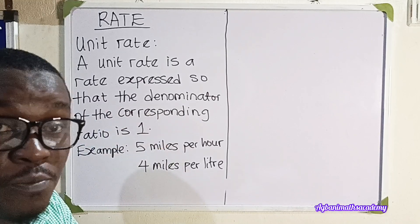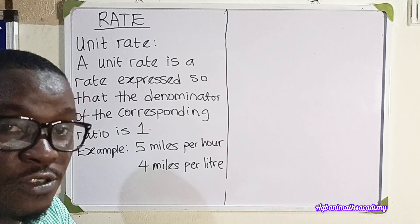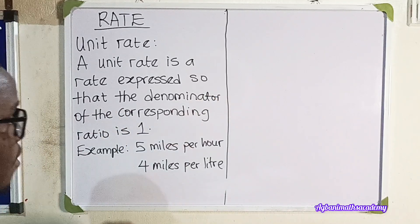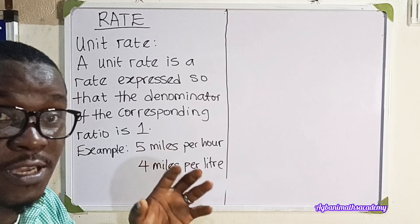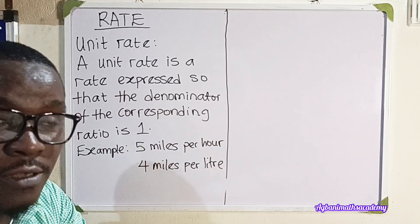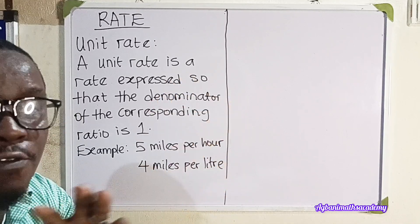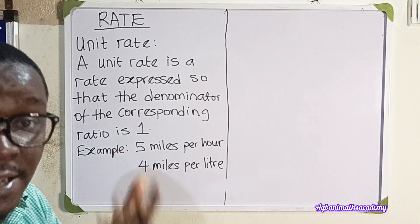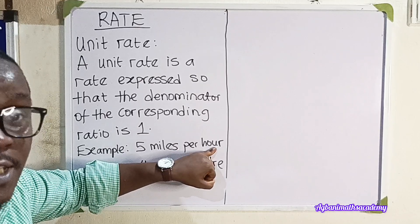Remember, rate compares quantities with different units. So when you have quantities with different units, we have one quantity per the other quantity. Now, 'per' means divided by. If I say 10 eggs per child, it means 10 eggs for one child. If I say 20 eggs per 10 children, it means 20 eggs for 10 children. So when you see 'per,' it means divided by — the first quantity is the numerator and the second quantity is the denominator.